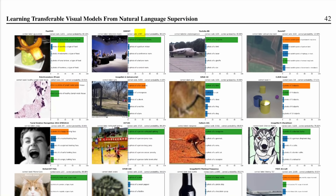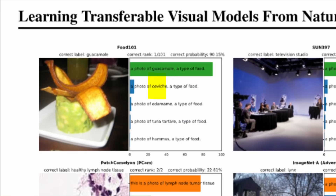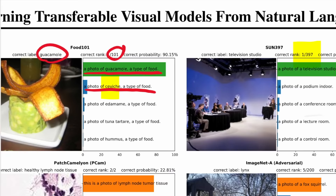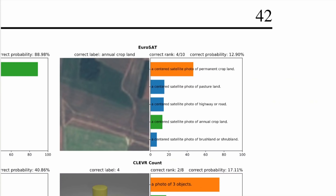What you may have noticed is that the labels aren't labels you would usually see in a classifier. These 101 labels — the label the classifier assigns is not just the word 'guacamole,' it's 'a photo of guacamole, a type of food.' That's the label. The second highest label is 'a photo of ceviche, a type of food.' It's not always a photo, but here for example, the label assigned is 'a centered satellite photo of permanent cropland,' where the correct label is 'annual cropland.' So the labels are longer natural language phrases.